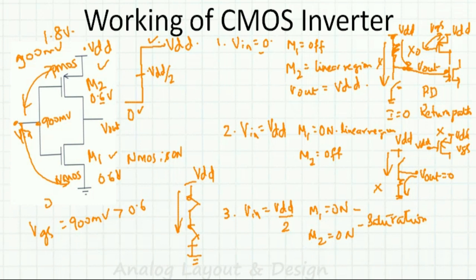So, only when VIN is transitioning from 0 to VDD does a current flow. When VIN is 0, current is zero. When VIN is VDD, current is also zero. A current flows only during the transition — we will see that in the next slide.